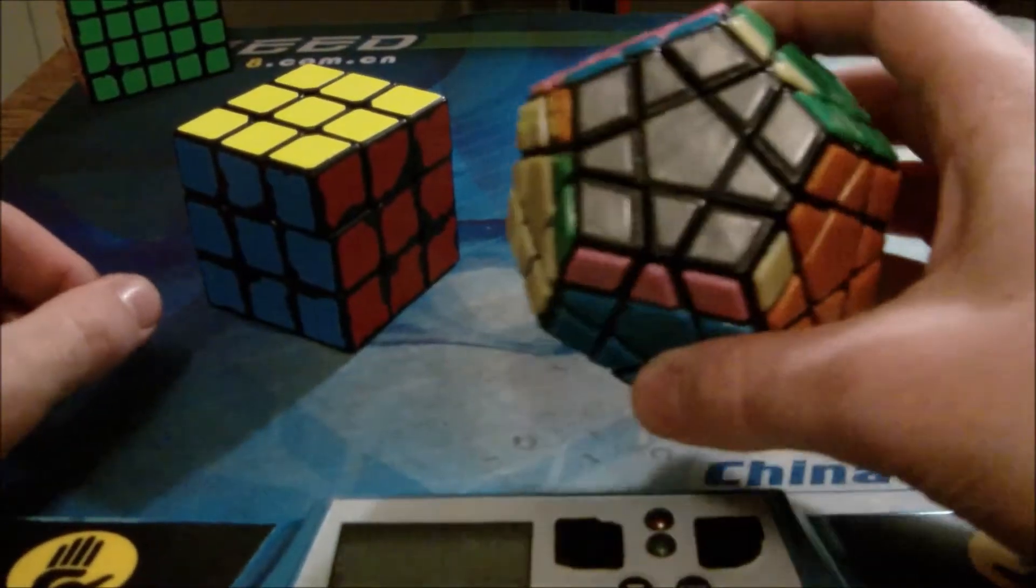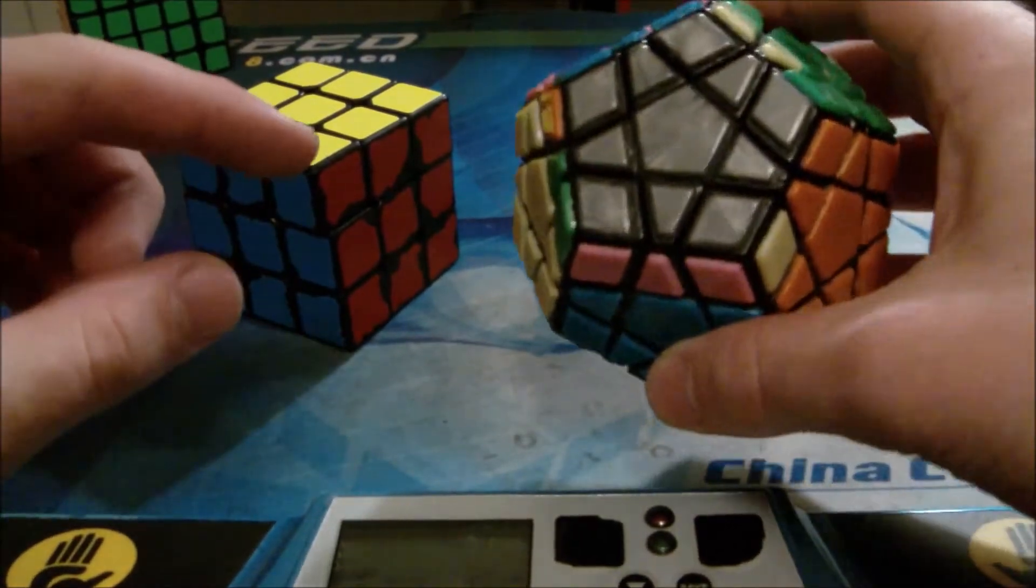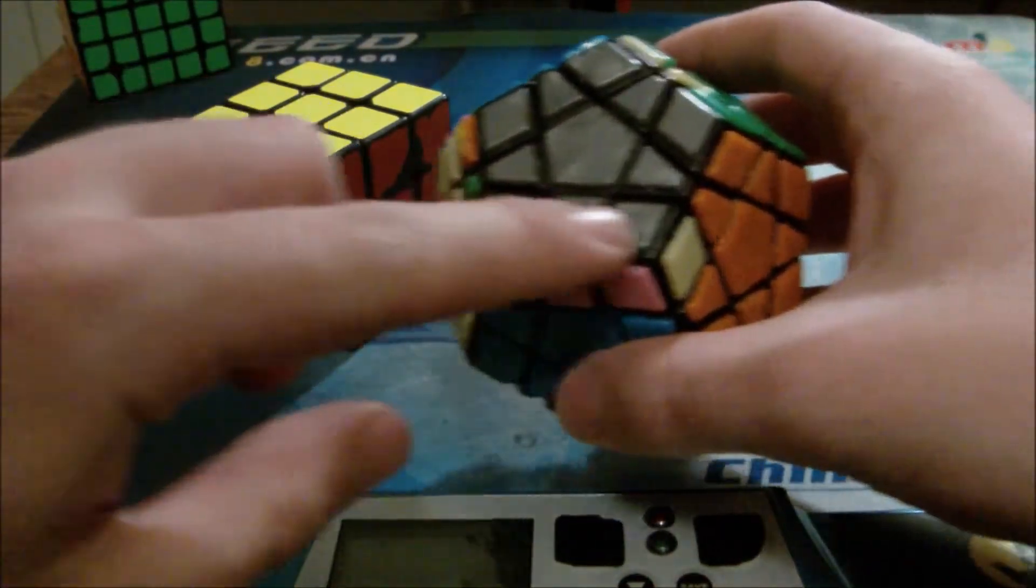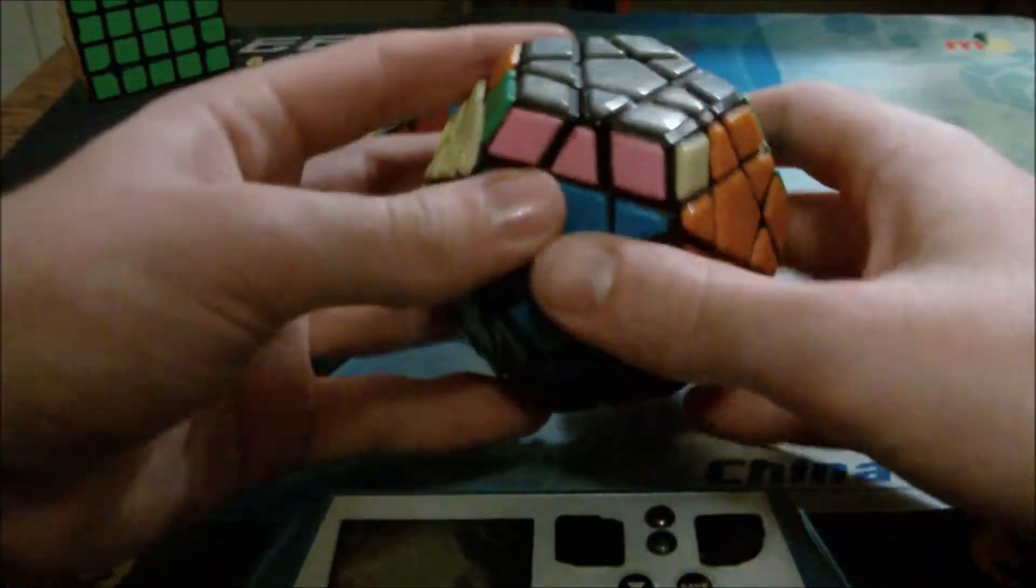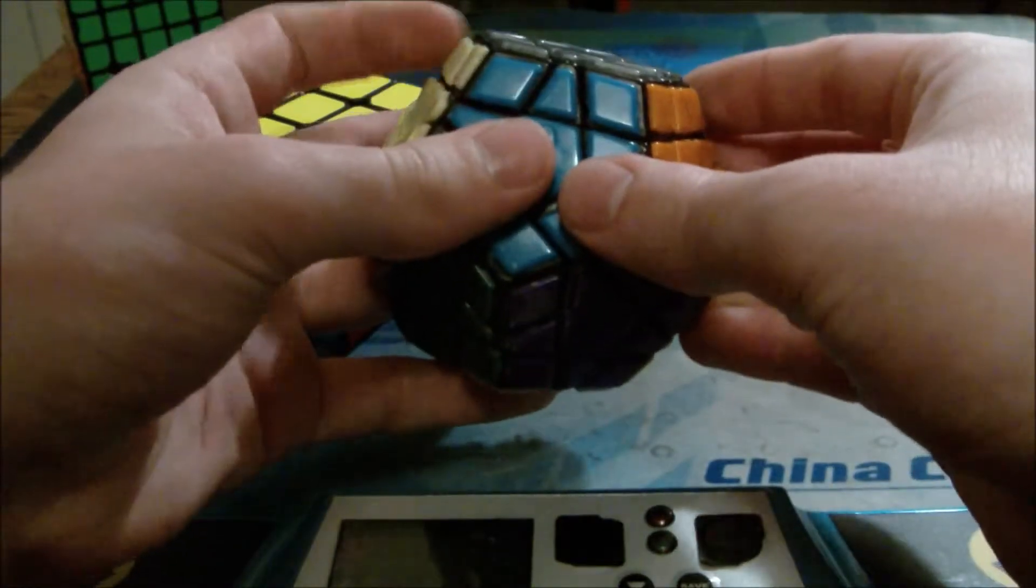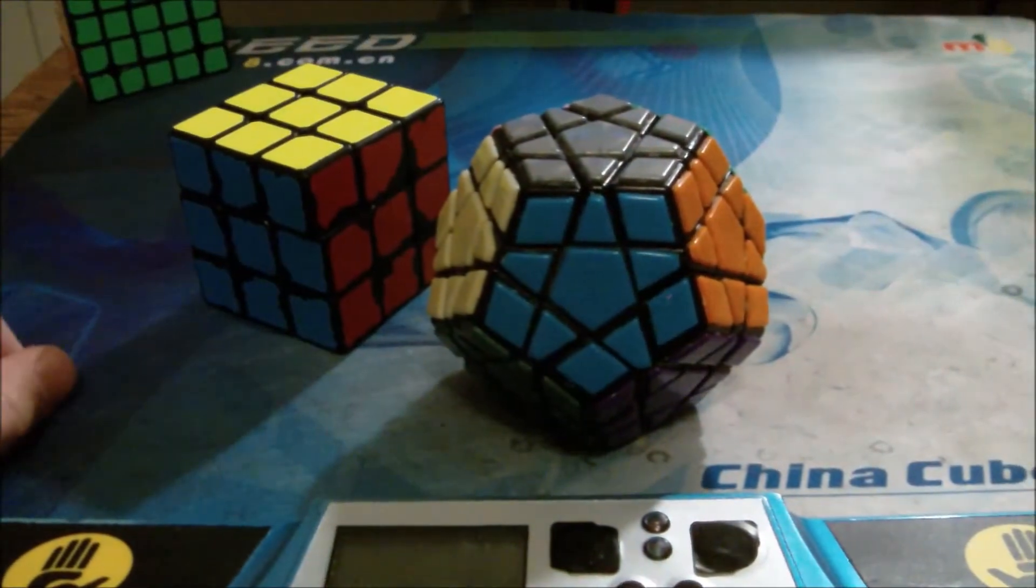And for the Megaminx one, you have to make sure that one block is in the front and one is in the back left. And then you just do the same algorithm. That's a U2 AUF. I messed up on that.